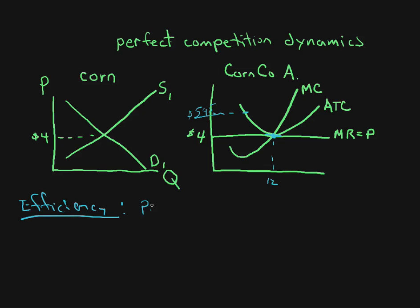So efficiency—production efficiency—what happens? Well, for pure competition we end up in the long run at the minimum average total cost.